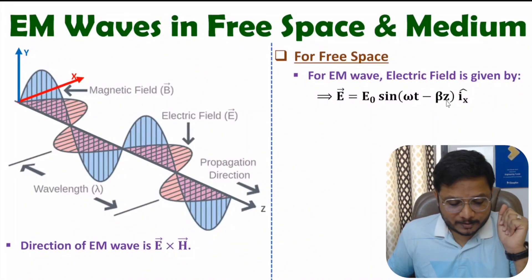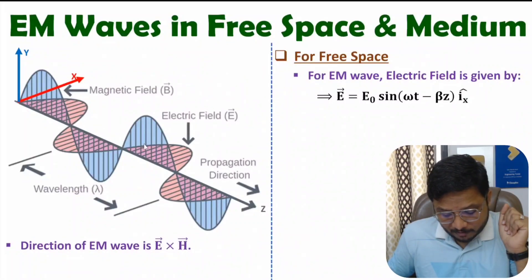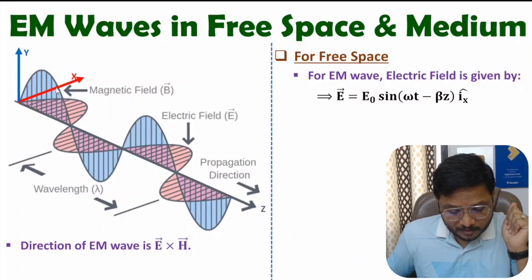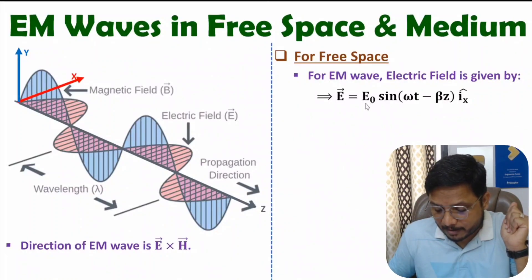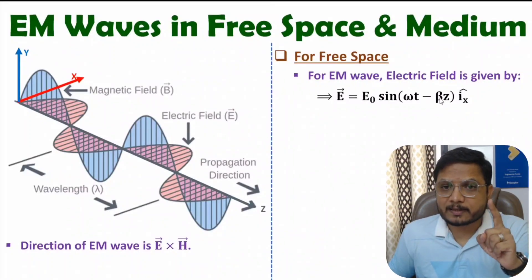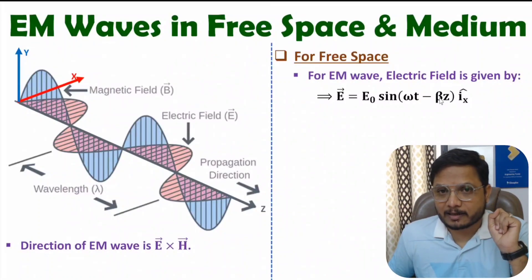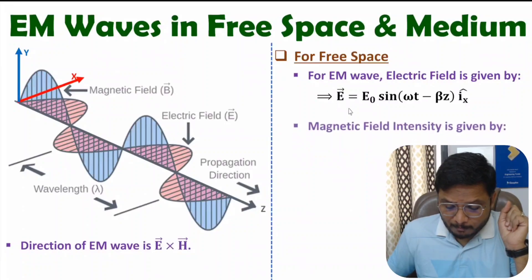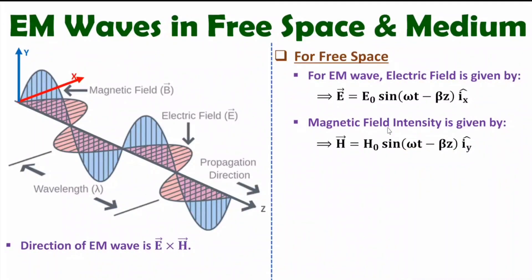One should know the wave equation. In the wave equation, direction of propagation is along the Z-axis and the signal oscillates with respect to time. We write it as E₀ sin(ωt − βz). Always remember: if there is a minus sign before βz, it means the direction of propagation is towards the positive Z direction. Similarly, for magnetic field intensity, the equation is H₀ sin(ωt − βz) in the Iᵧ direction, meaning the magnetic field oscillates with respect to the Y-axis.